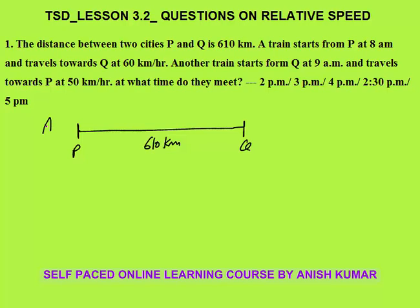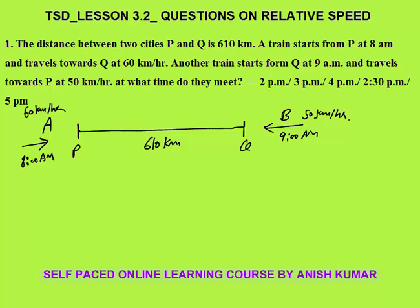Train A starts from P at 8 AM. Train B starts from Q at 9 AM. The speed of train A is 60 kilometers per hour and train B is 50 kilometers per hour. Now we simply can't add 60 plus 50 and calculate distance directly because the timings are different.